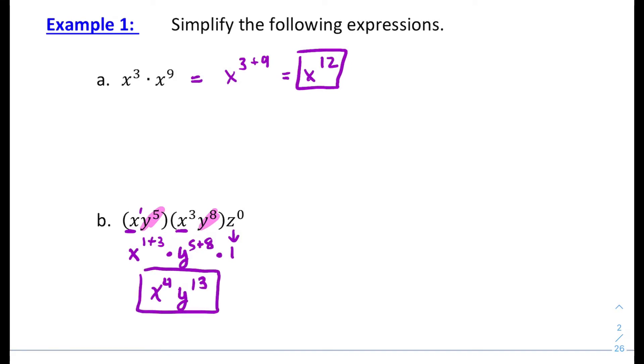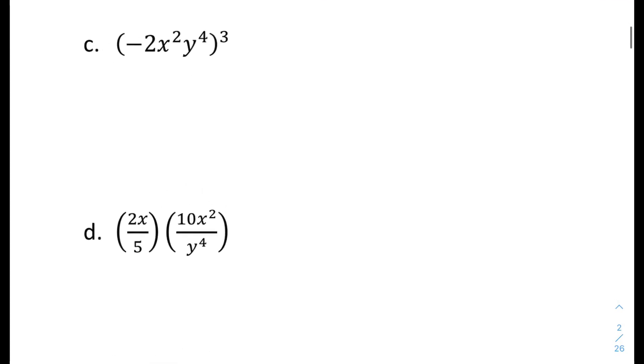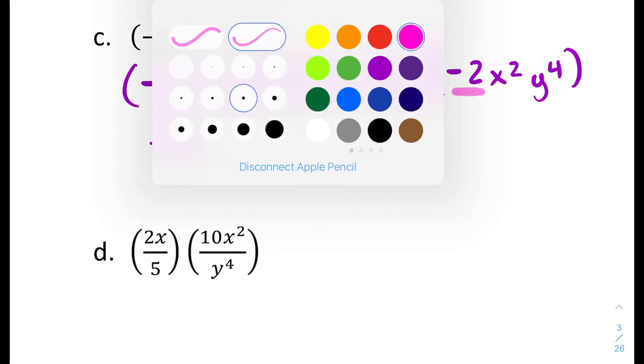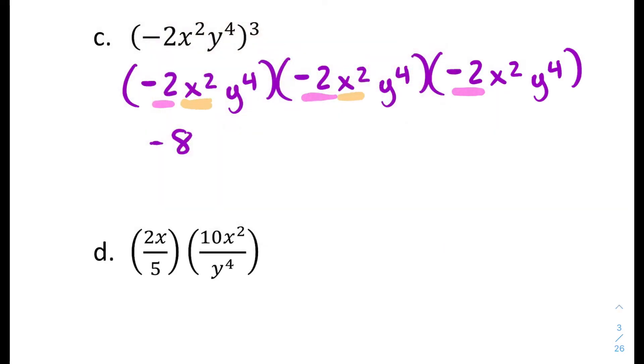Let's look at another one. I'm just going to write this out times itself three times. You can always do it that way if you prefer. So if I'm raising this to the third power, that means I'm taking it times itself three times. And then I could do my multiplication. Negative two times itself three times is negative eight. If I have x squared times itself three times, that gives you a total of six factors of x. Two plus two plus two.